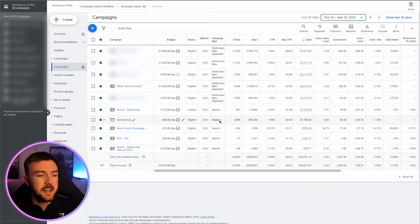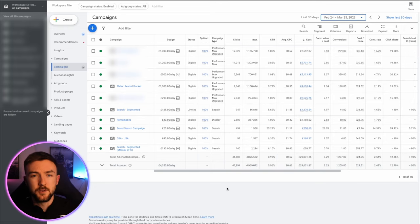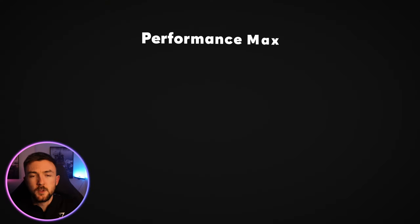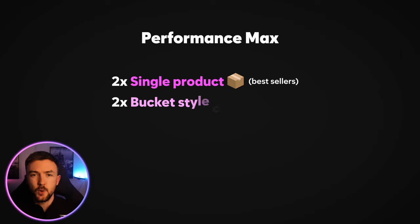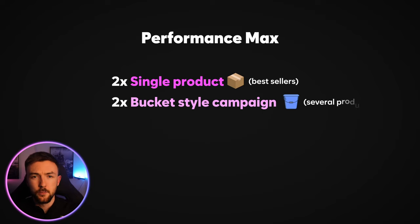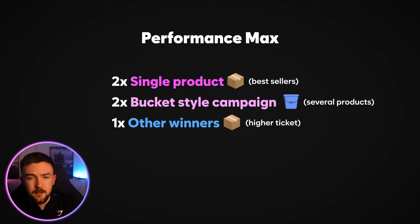I'm going to break down exactly why I've got five P-Max campaigns, what products are in which, and how to segment them. Out of these five Performance Max campaigns, two of them only have a single product in them — these are two of my best sellers. I have two that are the bucket-style campaigns with several products within them, and another one with higher-ticket winning products that sell for a lot more than any other product on my store.